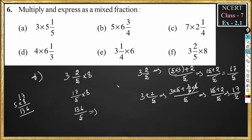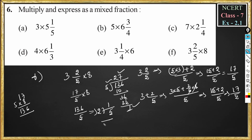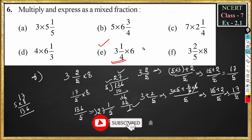To convert 136/5 into a mixed fraction, we divide 136 by 5. 5 twos are 10, bringing down 36; 5 sevens are 35, remainder is 1. We put the quotient 27 as the whole number, remainder 1 in the numerator, and divisor 5 in the denominator. The answer is 27¹/₅. This is how we solve problem number 6. Please don't forget to solve part E and write the answer in the comments.